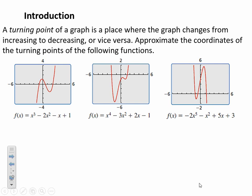Let's check our work on the introduction. For the first graph, the function is increasing, then it reaches a point and starts decreasing, then reaches another point and starts increasing again — those two points are the turning points. I would estimate turning points at approximately negative one-fourth, one and one-fourth, and at one and one-half, negative one and one-half.